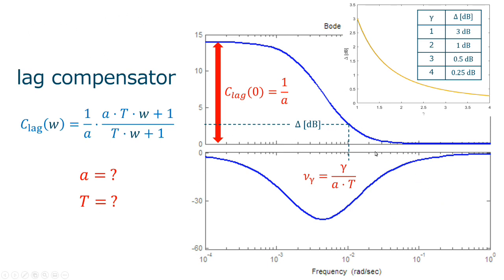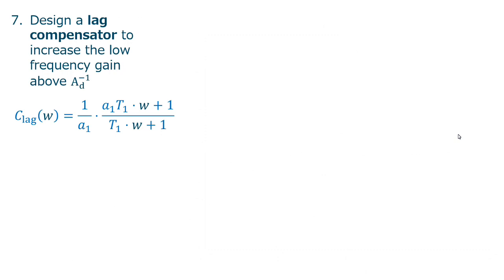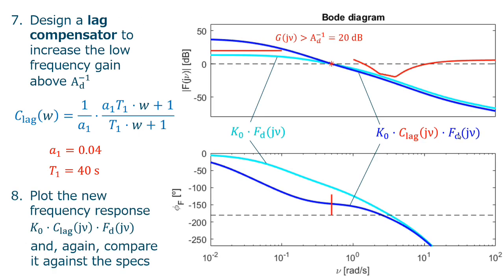You can also see that the impact of selecting the adequate T depends on how much gain we can tolerate for different frequencies. So we design a lag compensator to increase the low frequency gain above the attenuation. This gives a gain of A1 and T1 depicted here. And now, as we plot the new frequency response, we can compare it against the specification. And we see that now, the open loop gain is above the attenuation. And is also below the inverse W. The only problem being that we are not complying the phase margin.